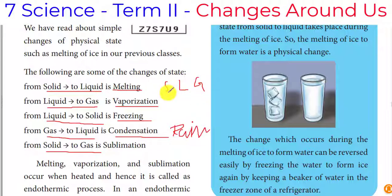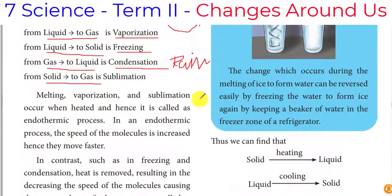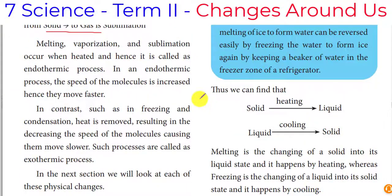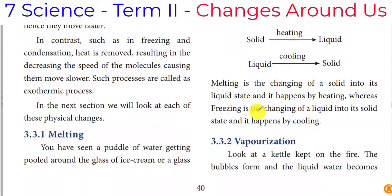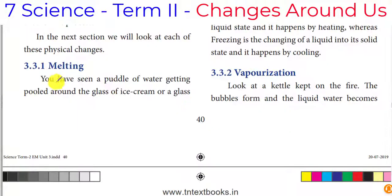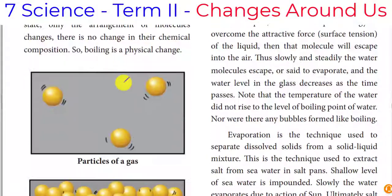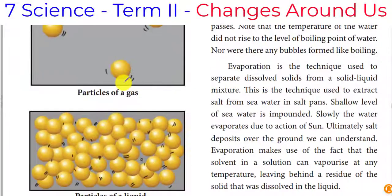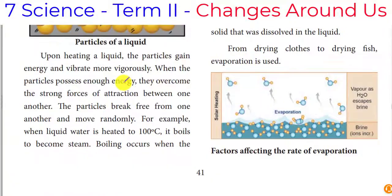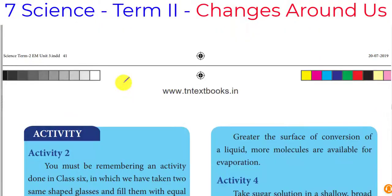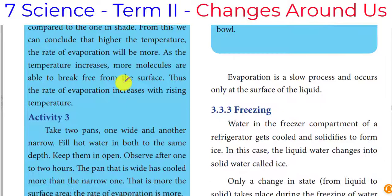When solid is directly converted into gas without becoming liquid first, it is called sublimation. An example of sublimation is camphor.